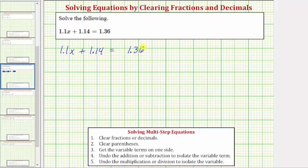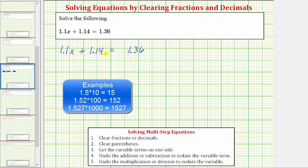To determine what value to multiply both sides by, we need to look at all the decimals and find the most number of decimal places that exist. Notice we have at most two decimal places, which means we can clear the decimals by multiplying both sides by 10 squared, or 100.